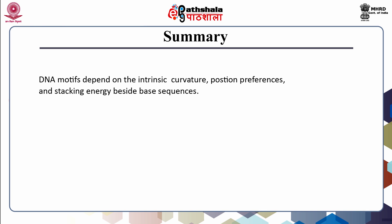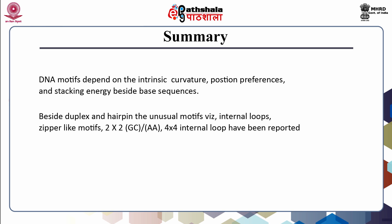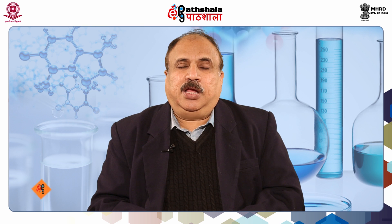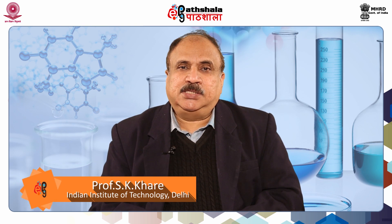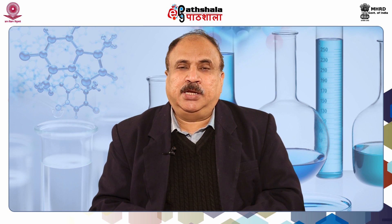In cells, DNA is found in different kinds of motifs, and the type of motif is decided by three major factors: intrinsic DNA curvature, position preference, and the stacking energy of the bases. The primary sequence of the nucleotide bases is also very important. So, while we have studied DNA in the form of Z-DNA, B-DNA, and A-DNA, there are also unusual motifs — internal loop motifs, zipper-like motifs, 2×2 motifs, and 4×4 motifs of different bases. In this chapter, we discussed the different kinds of motifs present in DNA, which are decided by intrinsic curvature, preferences, and energy values.